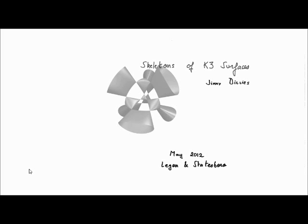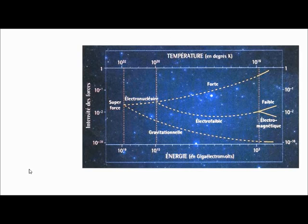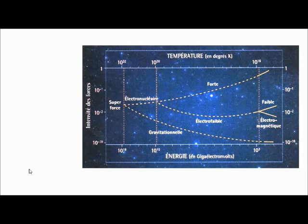The motivation for this talk comes from physics. When people study physics, they realize that the four forces we encounter in nature — electroweak, electrostrong, gravitational, and electromagnetism — can actually be put together into one package. These forces have different ranges, but if you go back in time to the Big Bang or at higher energy, there is a way to wrap them up into one theory. The aim of physicists is to have a super-theory that encompasses all of those. Unfortunately, so far we haven't been able to do this.